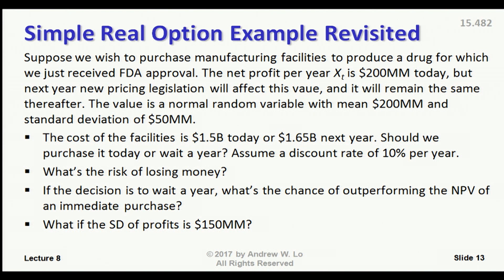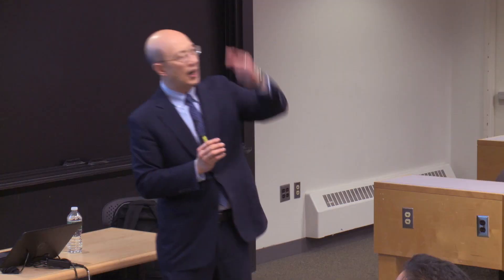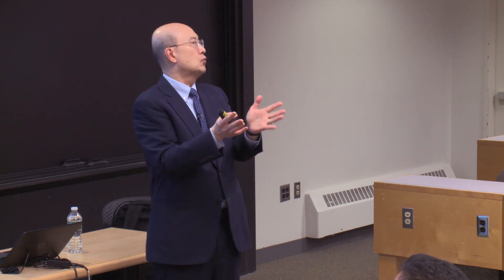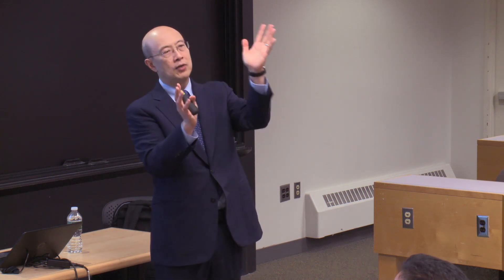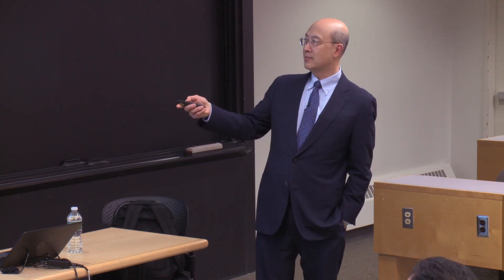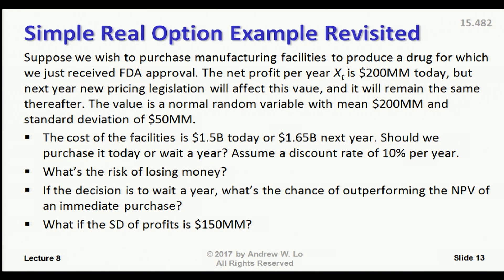We're thinking about buying manufacturing facilities to produce a drug for which we just received FDA approval. The net profit per year is $200 million today. But next year, because of some new legislation, there's some risk — it's going to have a mean of $200 million but a standard deviation of $50 million. The original example had either $100 or $300, with an average of $200. Here, I'm modeling it as a normal random variable with mean $200 million and standard deviation $50 million.